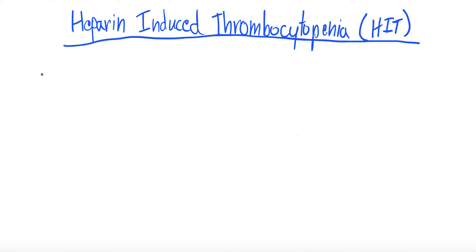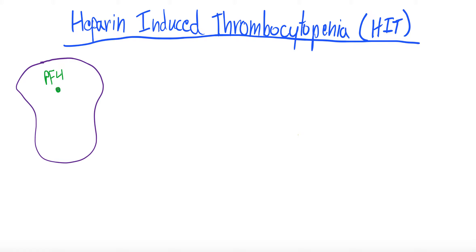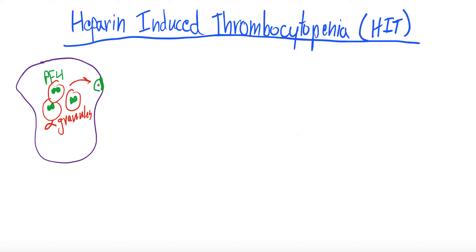For pathophysiology, let's do some drawings. We'll draw a platelet. Within the platelet there are platelet proteins — one important one here is platelet factor 4, which we'll draw as a kind of dumbbell shape. Platelet factor 4 is released from the platelet by alpha granules: the alpha granules bind with the platelet wall and release platelet factor 4 out into the general circulation.